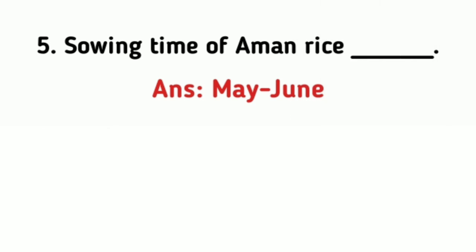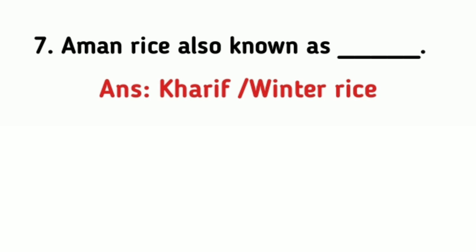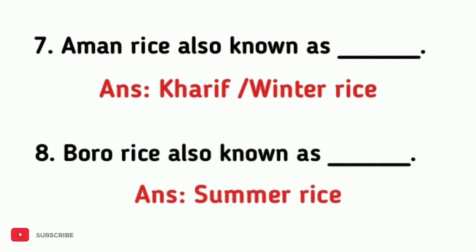The sowing time of aman rice is May to June, and the sowing time of boro rice is December to January. Aman rice is also known as kharif or winter rice, and boro rice is also known as summer rice.